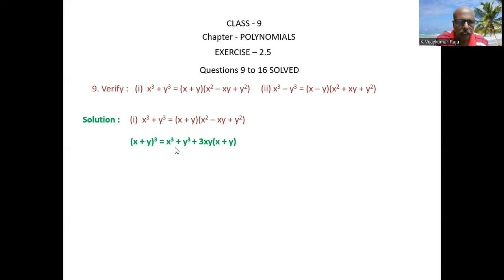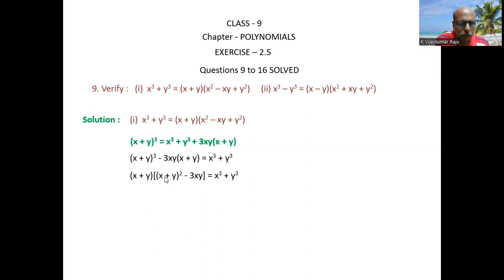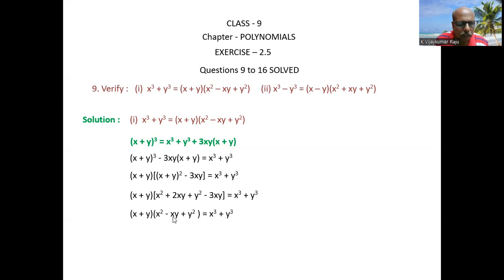Taking (x+y) common: x³ + y³ = (x+y)[(x+y)² - 3xy]. Expanding using (a+b)² = a² + 2ab + b²: = (x+y)[x² + 2xy + y² - 3xy] = (x+y)[x² - xy + y²]. So x³ + y³ = (x+y)(x² - xy + y²), which is what we had to prove.